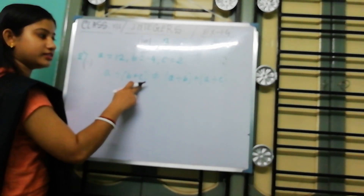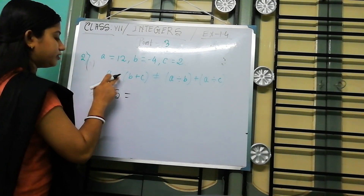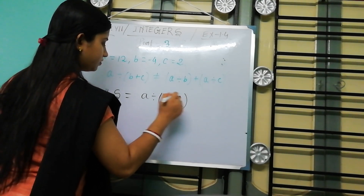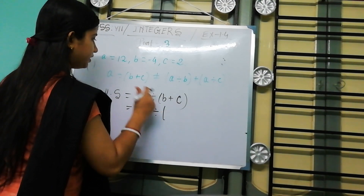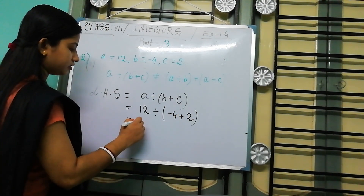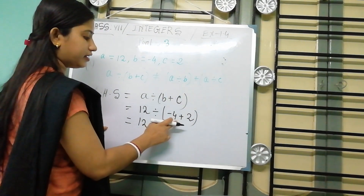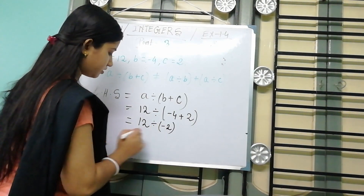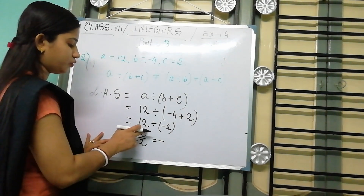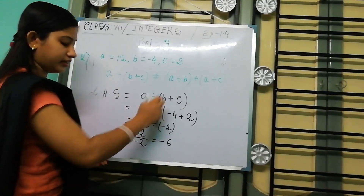So this is LHS and this is RHS. First we check for LHS. LHS equals A divided by (B plus C), that is 12 divided by (minus 4 plus 2). First we calculate the bracket portion: minus 4 plus 2 equals minus 2. So this is 12 by minus 2, and the sign is minus. 12 by 2 means 6, because 2 into 6 is 12. So LHS equals minus 6. Now find the RHS.